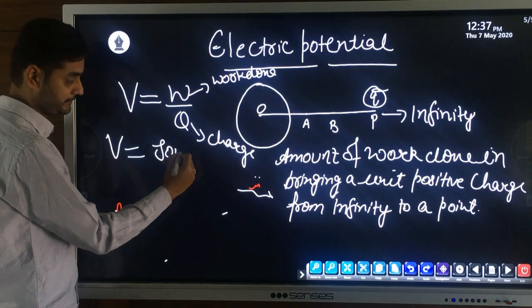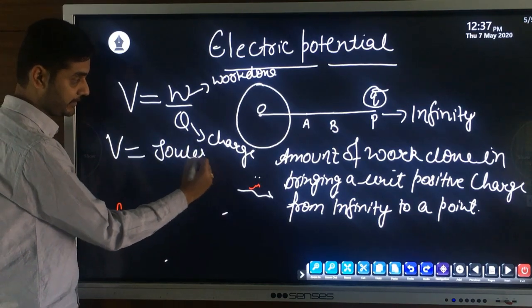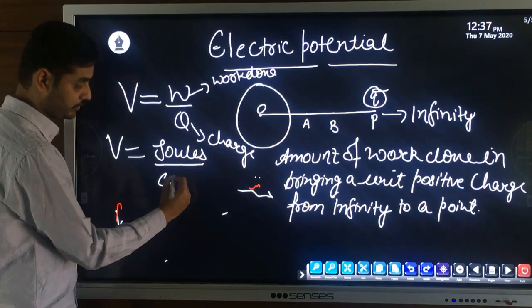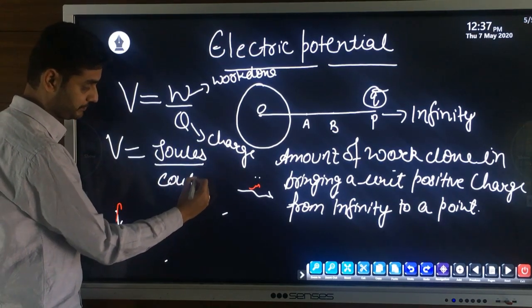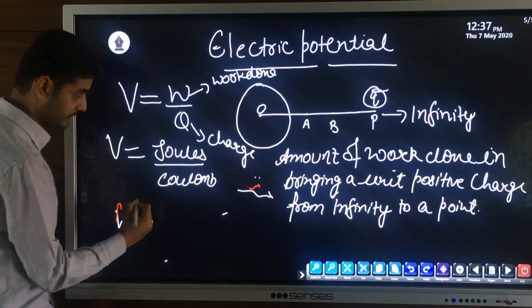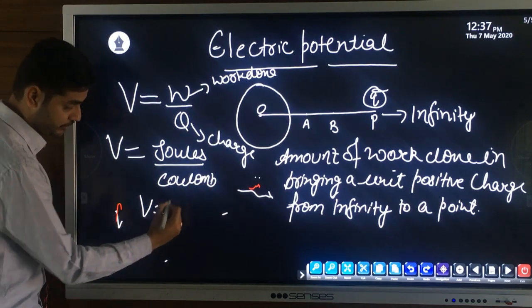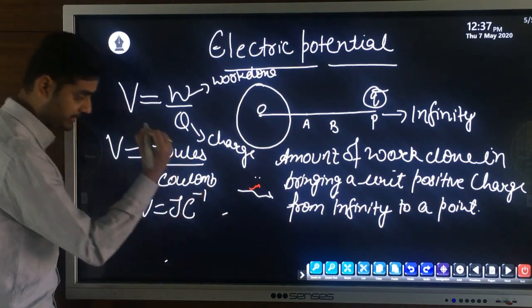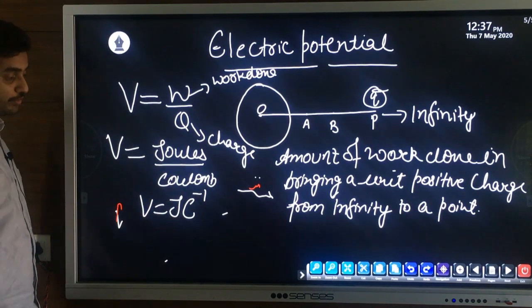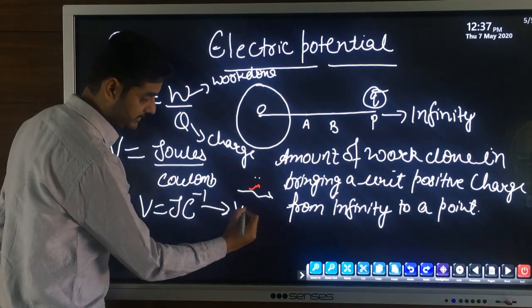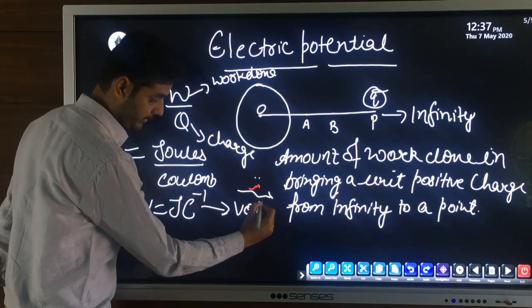The unit of electric potential: work done is in joules and charge is in coulombs, so the unit is joule coulomb inverse, which is also called volt.